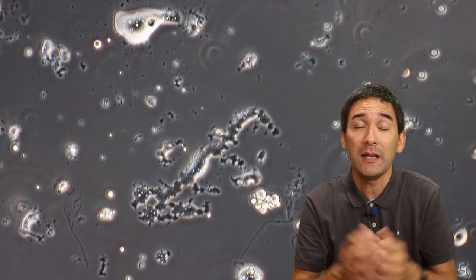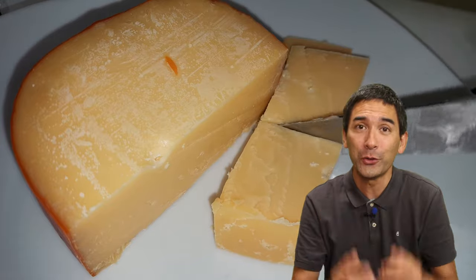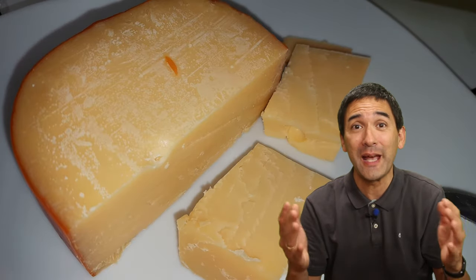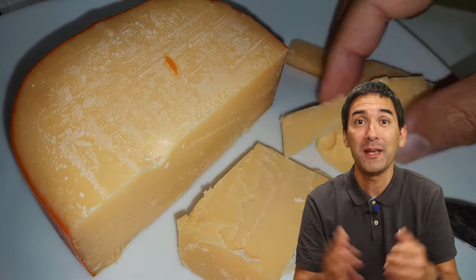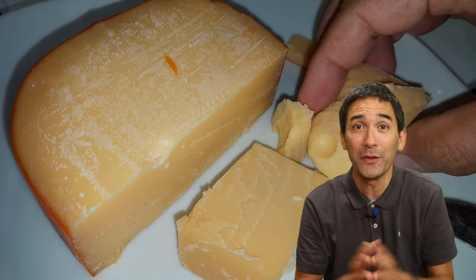So I came to the conclusion, no, those white dots on the surface of the cheese are not a problem and the cheese can be eaten. But of course, this begs the question, well, what are those white dots then? What are they?